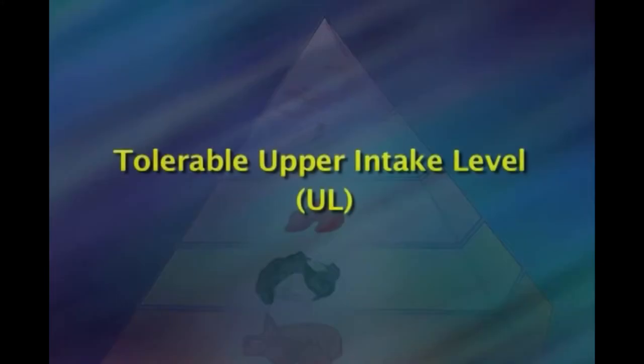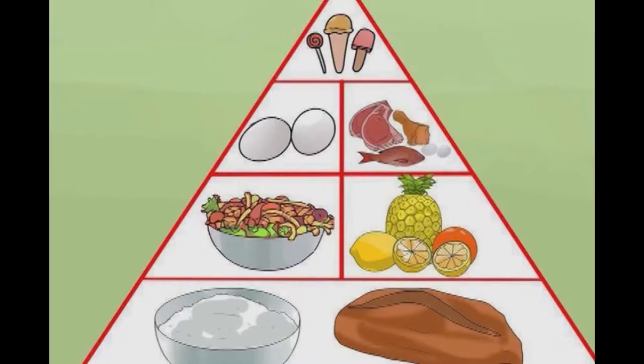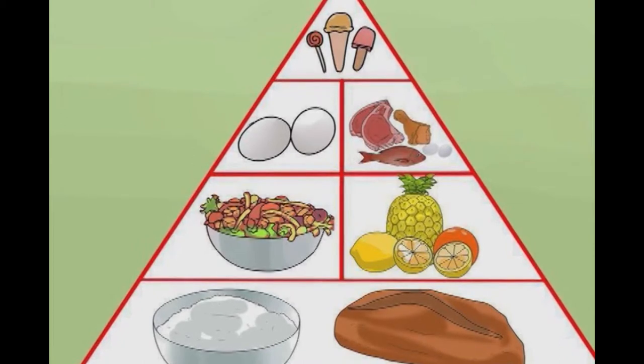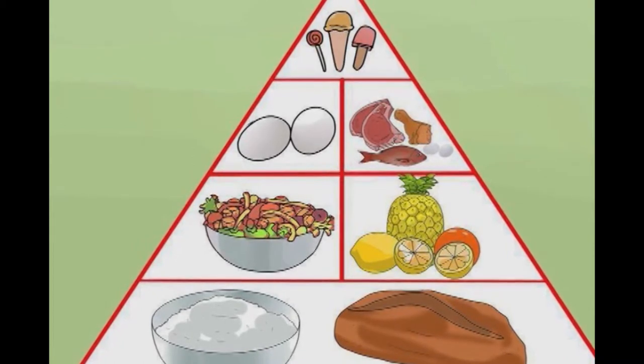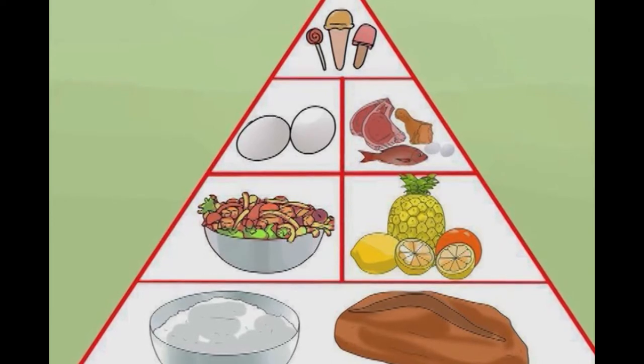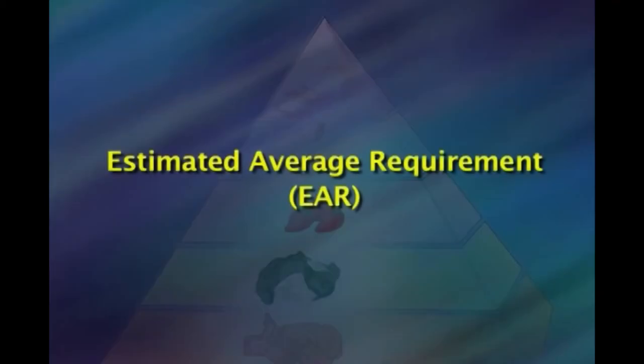Tolerable Upper Intake Level (UL) is the highest average daily nutrient intake level likely to pose no risk of adverse health effects for most individuals in the general population. As intake increases above the UL, the potential risk of adverse effects also increases. Estimated Average Requirement (EAR) is the average daily nutrient intake level estimated to meet the requirement of half of the healthy individuals in a particular life stage and gender group.